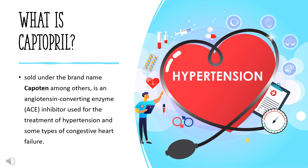What is Captopril? Captopril, sold under the brand name Capoten among others, is an angiotensin-converting enzyme (ACE) inhibitor used for the treatment of hypertension and some types of congestive heart failure. Captopril was the first oral ACE inhibitor found for the treatment of hypertension. Captopril was patented in 1976 and approved for medical use in 1980.